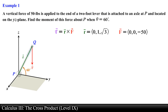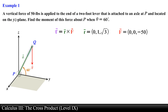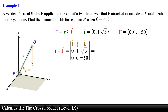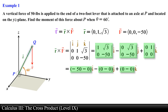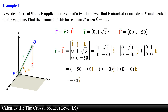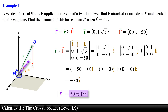Now that we have the components of both the position and force vector, let's go ahead and find the moment or torque about point P. We start by setting up our determinant, then find the minors of the matrix, and compute the determinant of each 2×2 matrix. Doing that, we obtain the following components for the moment: the torque vector will point in the negative x direction and will have a magnitude equal to 50 foot-pounds.